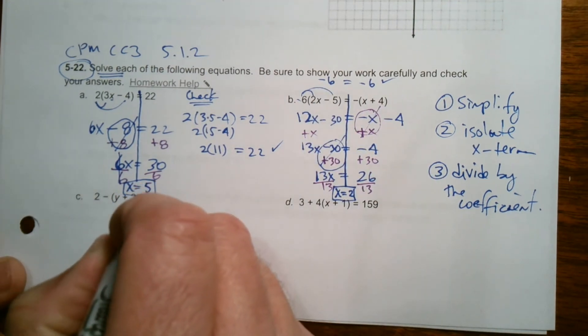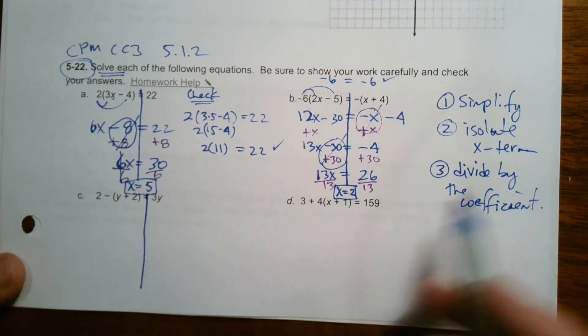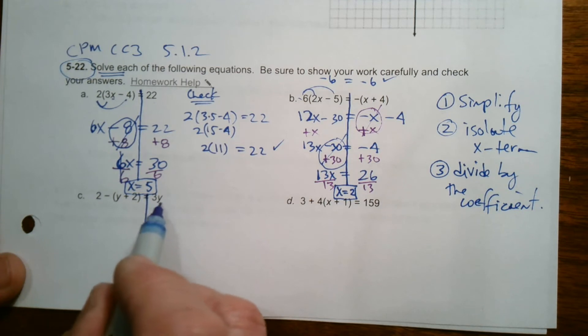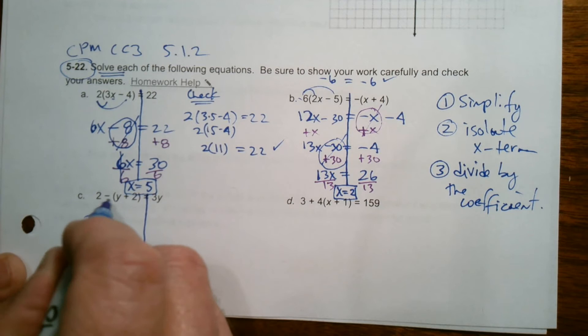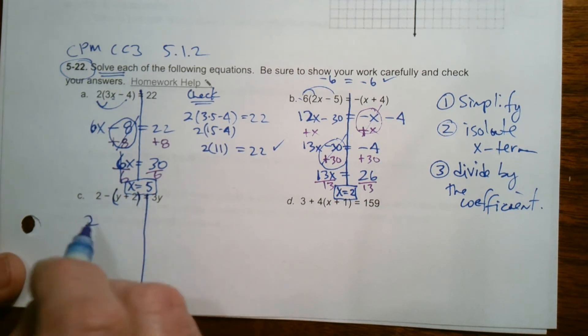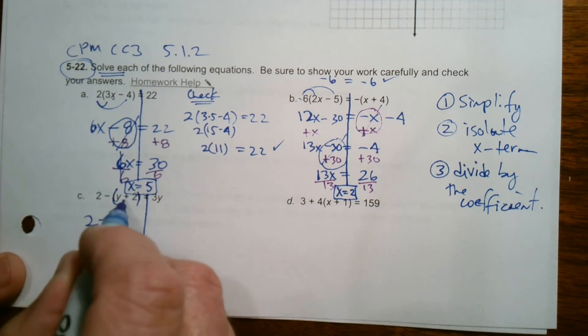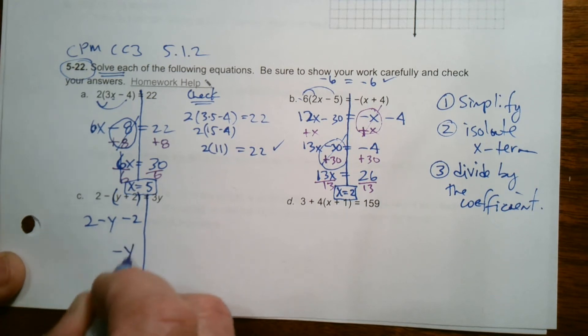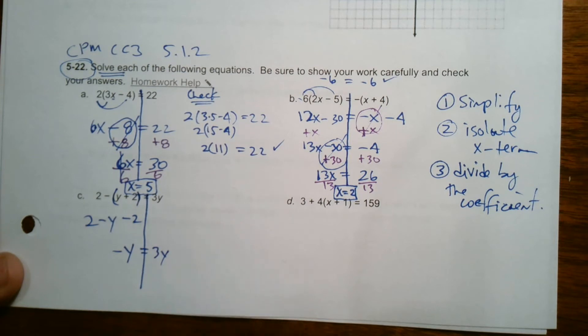Alright, C. First of all, simplify. I have some simplifying on this side to do. Three Y, there's nothing to combine so leave it at three Y. But this side I got to distribute that minus because I got a set of parentheses here. So the minus goes through, it becomes two minus Y and then instead of a plus two is now it's minus two. You distribute that minus. And then I get to combine like terms. I have a two minus two, a two and a minus two becomes zero, those cancel. So all that's left on this side is just negative Y is equal to three Y.